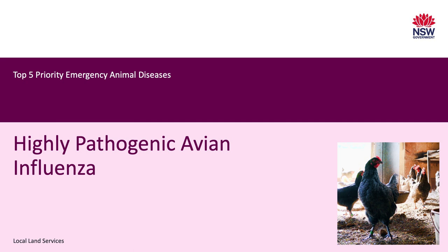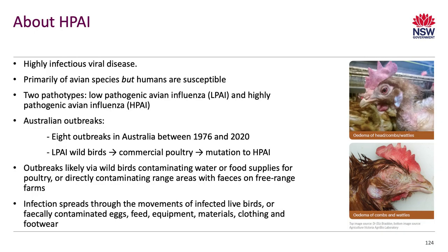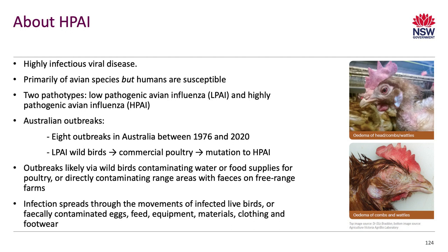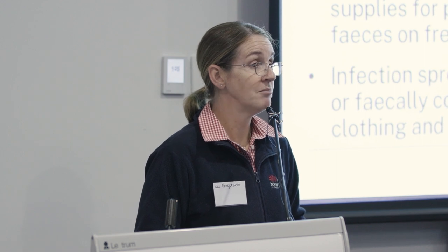The last of the top five priority EADs is highly pathogenic avian influenza, which has come into Australia previously but has been eradicated each time. It's a highly infectious viral disease. Humans are susceptible to avian influenza, with both low pathogenic and highly pathogenic forms. We've had eight outbreaks since 1976 — the most recent was in Victoria in 2020, and around Young and Cowra in 2013. Outbreaks are likely to occur via wild birds contaminating water or food supplies for poultry, or directly contaminating range areas, with free-range farms at particularly high risk.